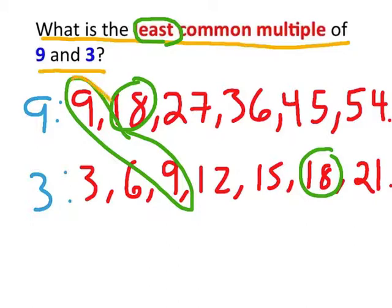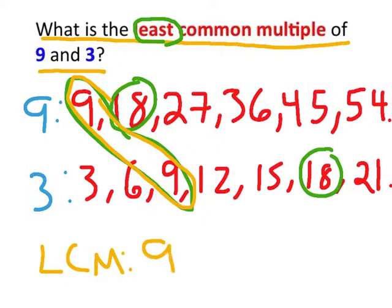Well, I think we already know that 9 is smaller. So our least common multiple, or LCM, for this problem is going to be 9.